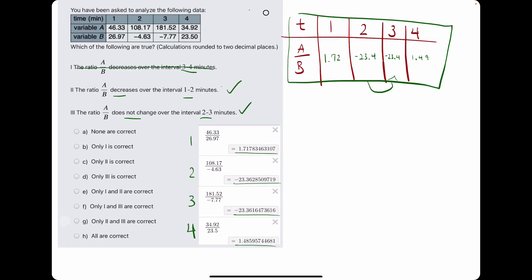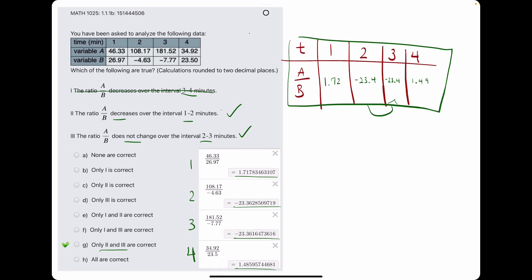So it looks like statements 2 and 3 are correct. So we're looking at possibly G. So we break out the eraser, and we see that G is correct.